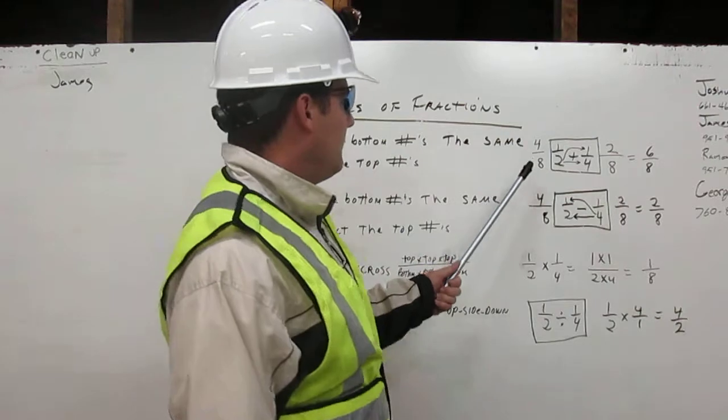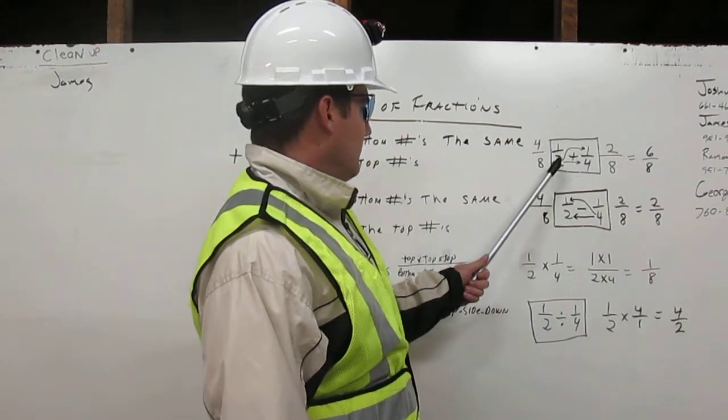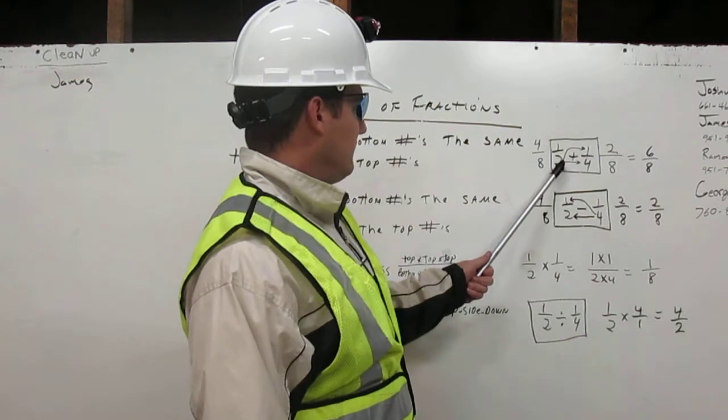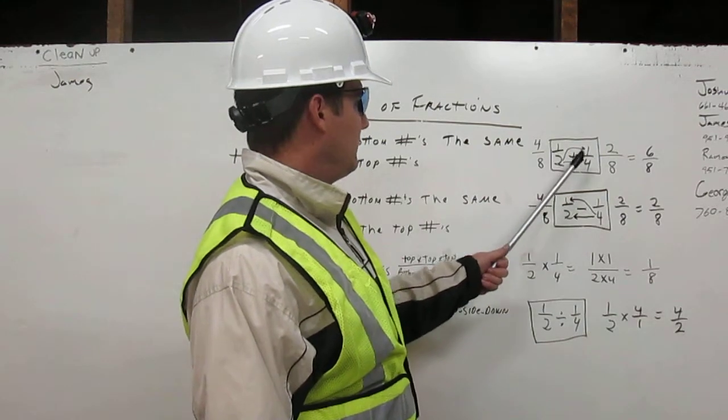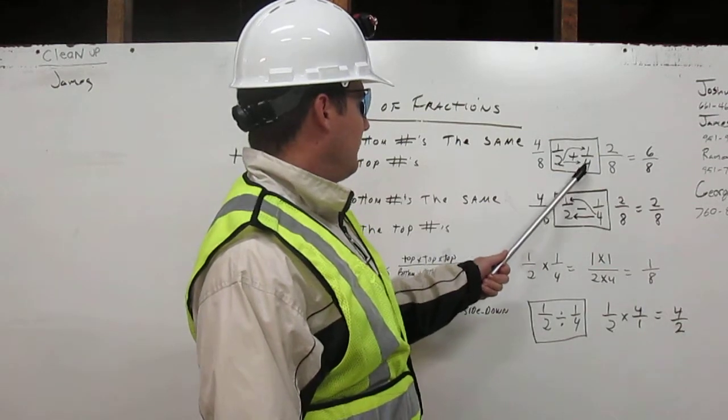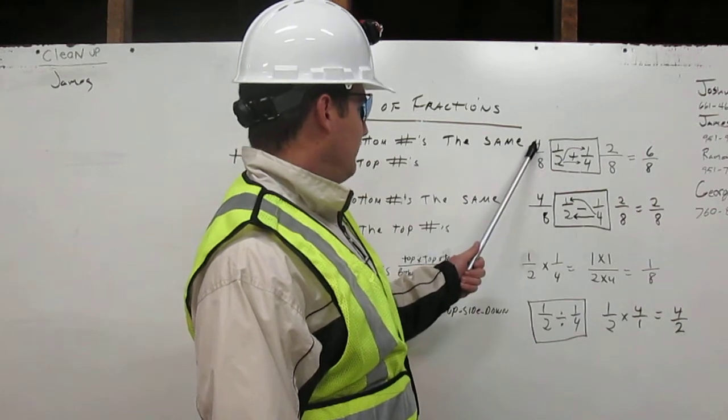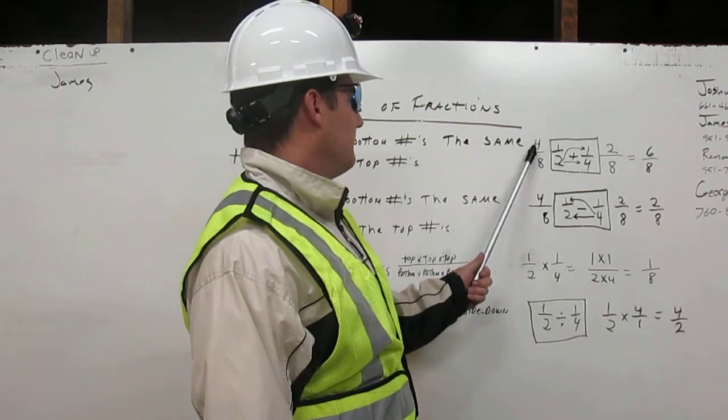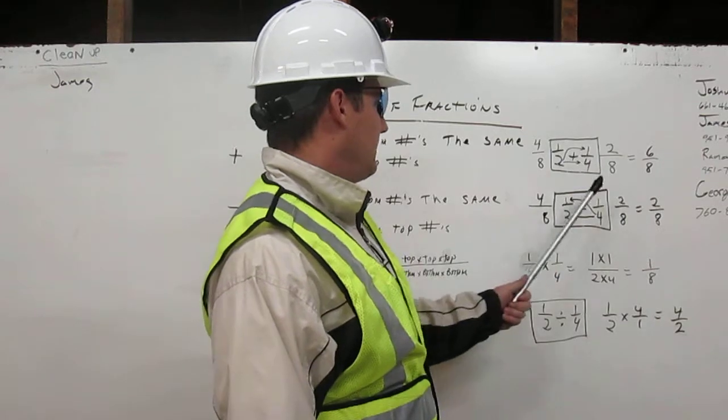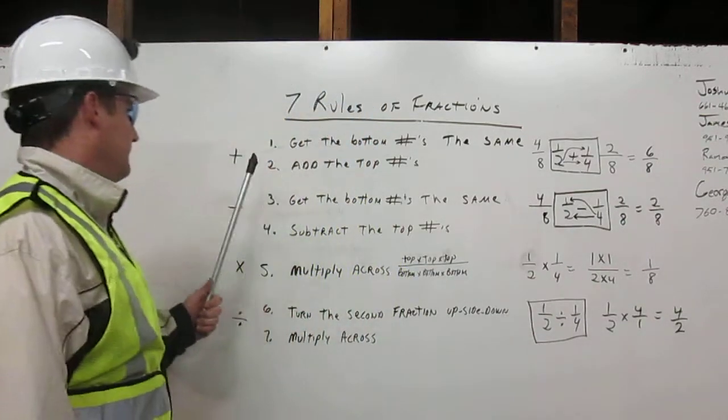In this example over here, we have one-half plus one-fourth. We are going to multiply two times one is two, two times four is eight. Now, coming the other way, four times two is eight, four times one is four. Then we add. Four plus two is six, and we carry the eight. The answer is six over eight. That's how you add fractions.